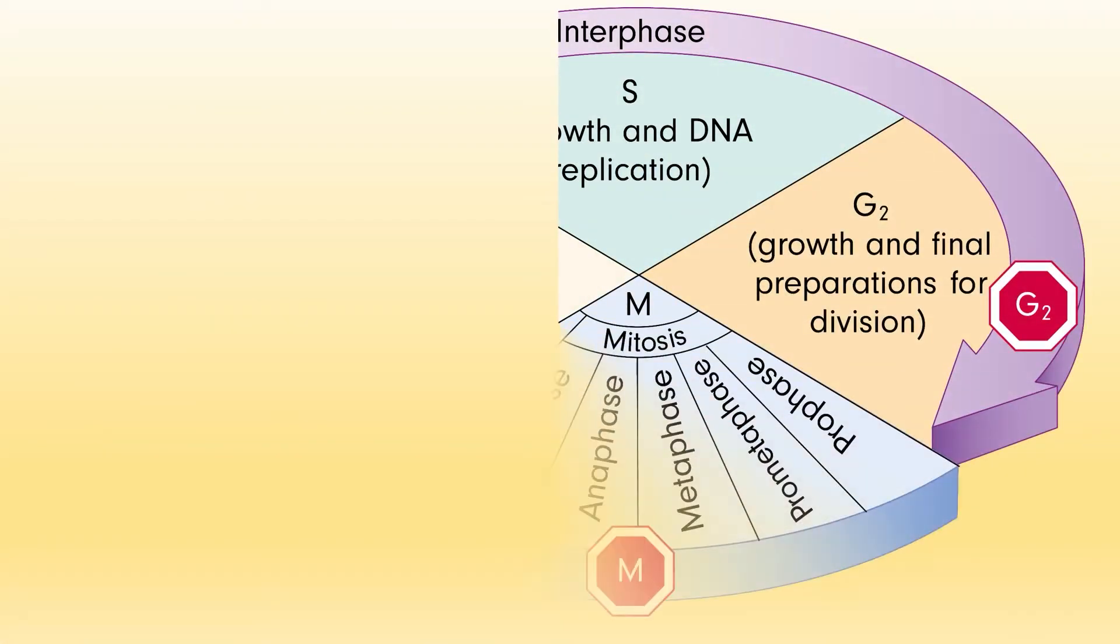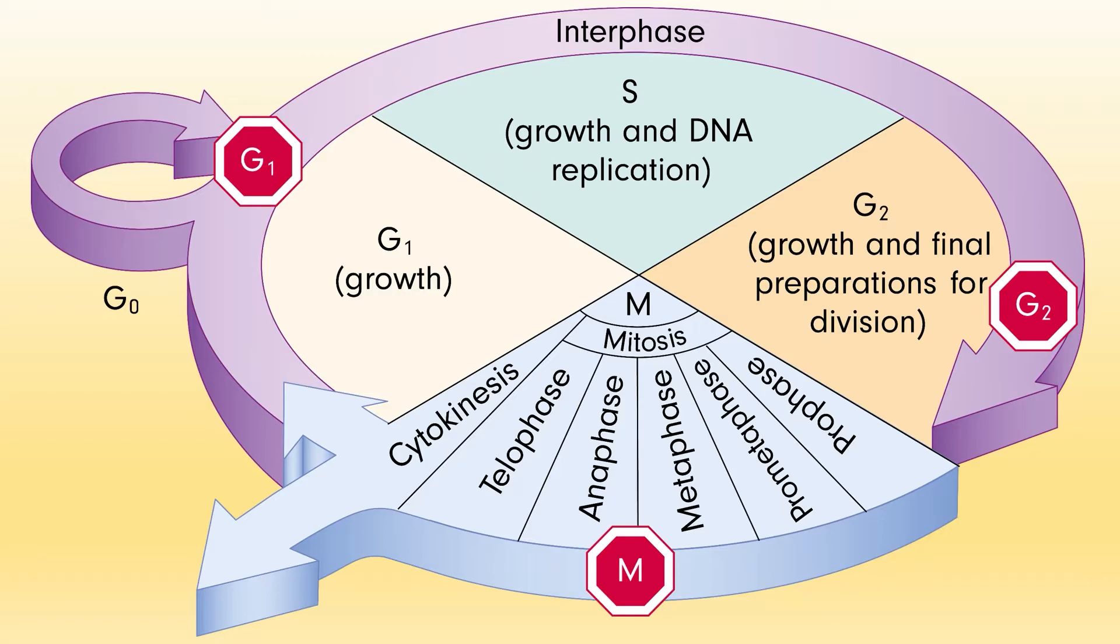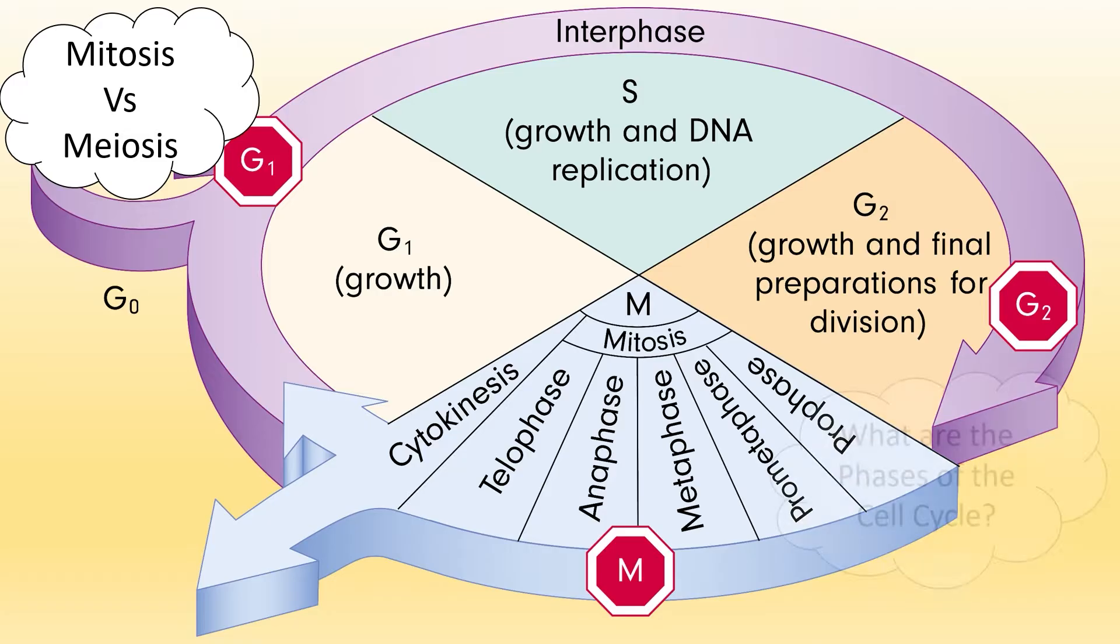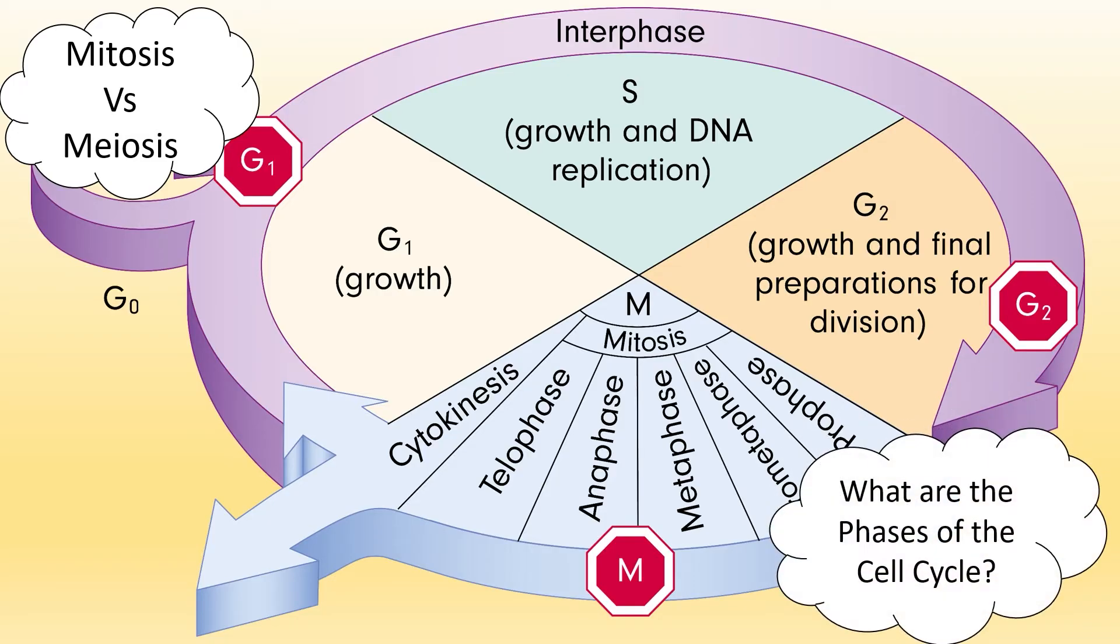Cells in both of these organisms contain DNA, which houses the heritable information that provides for the continuity of life. Cells in all domains of life follow the same basic cell cycle.